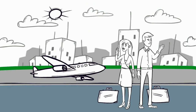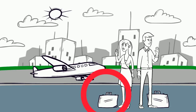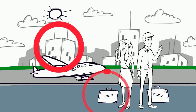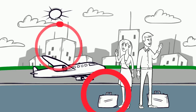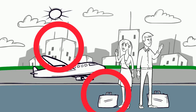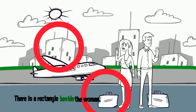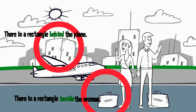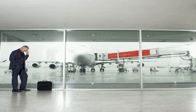There are rectangles in this picture. Do you see them? I can see the rectangles. There is a rectangle beside the woman, and there is a rectangle behind the plane.